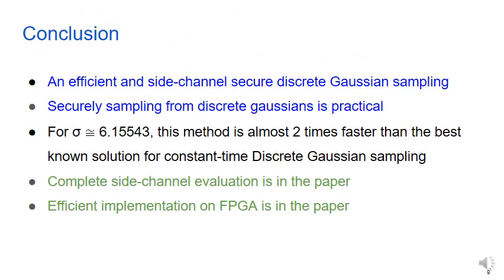So in conclusion, in this paper, we provided an efficient and secure method for discrete Gaussian sampling which was an open problem for a long time. This method can be used even in resource-constrained or small devices as implementing this method doesn't require any special instructions or large memory. We tested this method with a discrete Gaussian distribution with sigma approximately equal to 6.15543 and this method turns out to be two times faster than the best known solution.